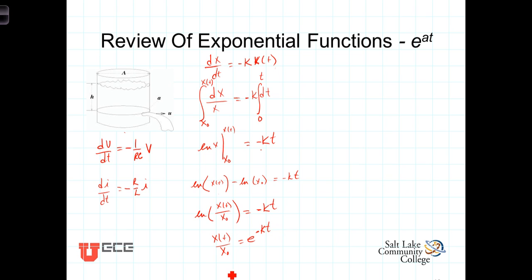Multiplying both sides of the equation by x-naught gives us what we've been looking for, and that is x as a function of t is equal to x-naught e to the minus k times t.